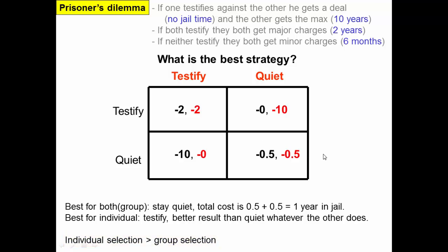This is the first interesting insight of game theory: when we analyze the decision-making process of individuals, we can understand how a system reaches a state that is not as good as it could be — without considering the motivations of individuals, we might not expect this outcome.